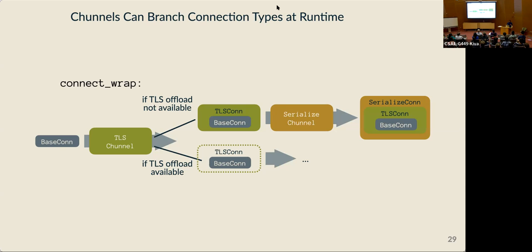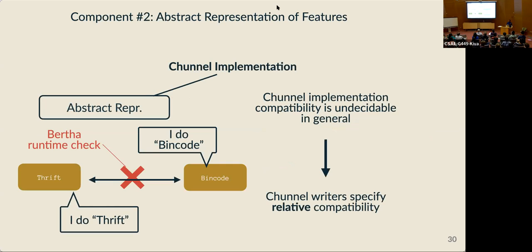The second component helps with portability and runtime reconfigurability. With some libraries, there could be many implementations of the same channel optimized to different network environments — like in the sharding example. The goal is for Bertha to determine at runtime whether channel implementations at each end of a potential connection are compatible. We can't just inspect channel implementations to determine mutual compatibility because in the most general case checking equivalence is undecidable. So instead we ask the application or channel developer to provide an abstract specification of the functionality their channel provides, and by comparing these abstract representations, if they're equivalent, we decide the two channels are compatible.